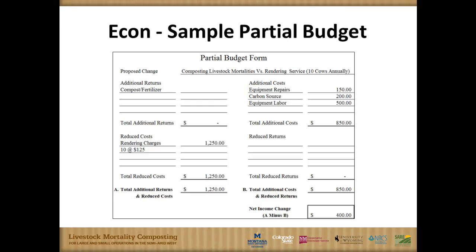In this example, $1,250 is saved as far as reduced costs for rendering charges. On the right side of that sheet, you have additional costs for equipment, a carbon source, and equipment labor. So this would net out to a $400 net benefit — a $400 net benefit to switching to composting on this operation.